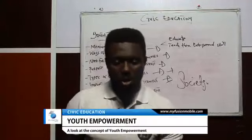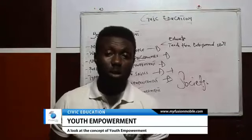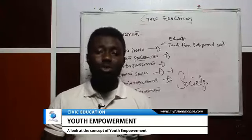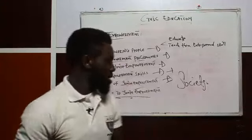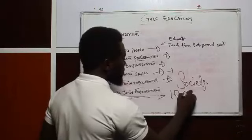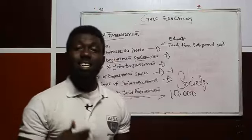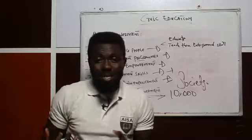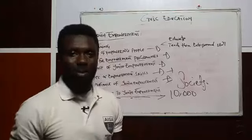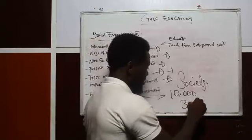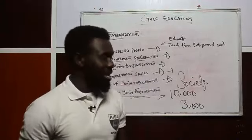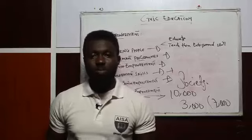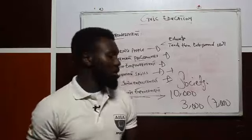Number two is corruptive tendency. Corruption comes from dishonest people who are not trustworthy. When an empowerment program is designed to benefit 10,000 youths, but some people amass part of the money budgeted for the program, only maybe 3,000 youths are reached and the remaining 7,000 are left out still roaming the streets. That is another big hindrance to youth empowerment.